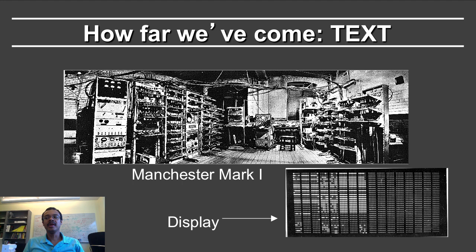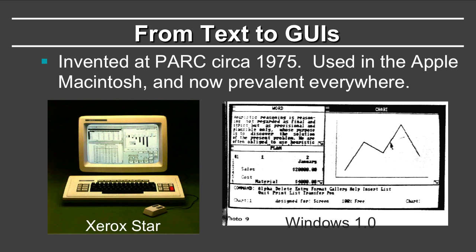Going from that to actual textual displays has been a major advance, and the way in which fonts are designed and displayed on the screen to create a smooth appearance are some of the very interesting early problems in 2D computer graphics. Of course, textual representations haven't been the main way in which computers have been used for many decades, and the major advance has been the notion of the graphical user interface.